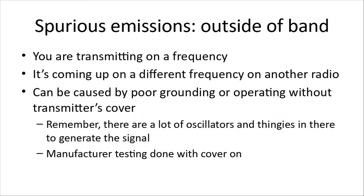Spurious emissions — you're supposed to be transmitting on a given frequency, but you're coming up on a different frequency on another radio. That can be caused by poor grounding or operating without your transmitter's cover. Inside your transmitter there are oscillators and other components that generate the signal, which is why your radio generally has a metal cover — even if it looks plastic, it's usually plastic over metal to stop those signals from getting out. Manufacturers only test with the cover on, and running without it risks generating a lot of interference.